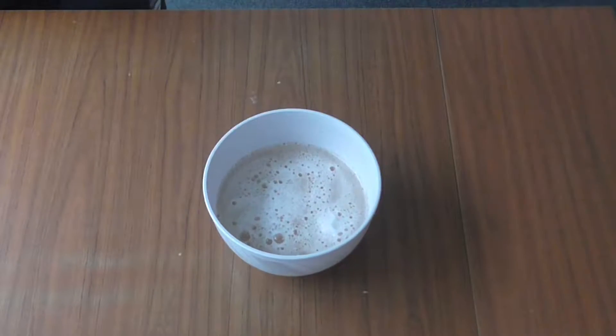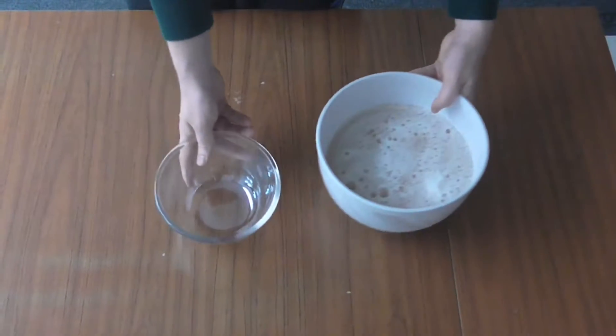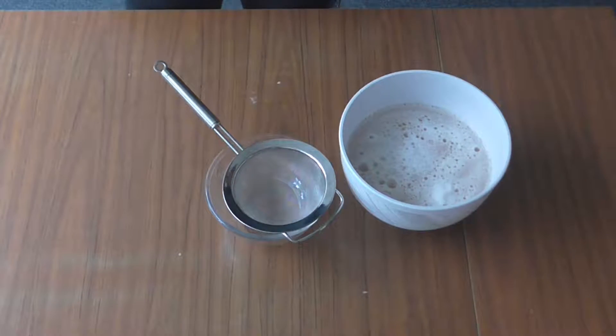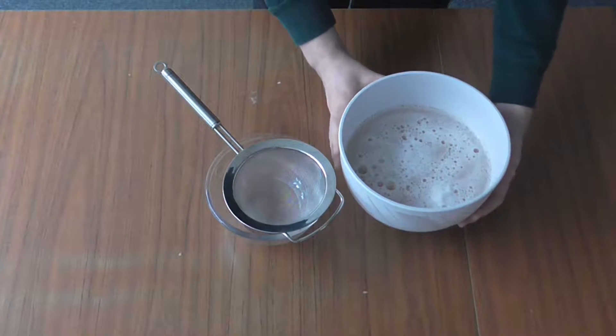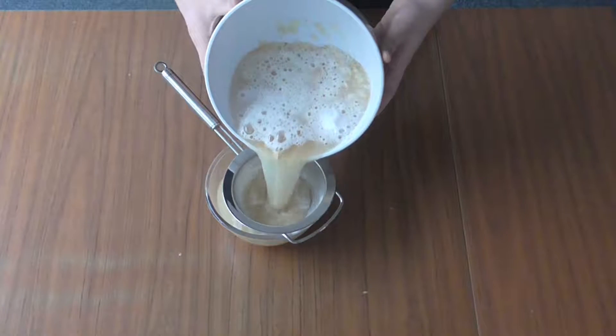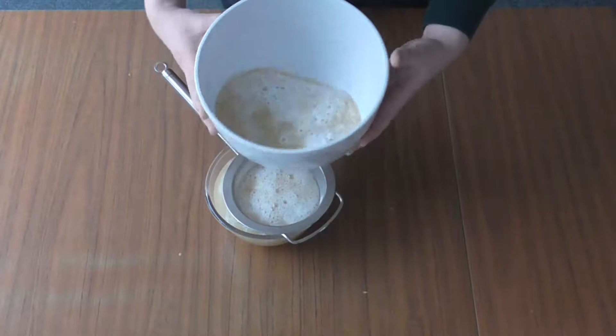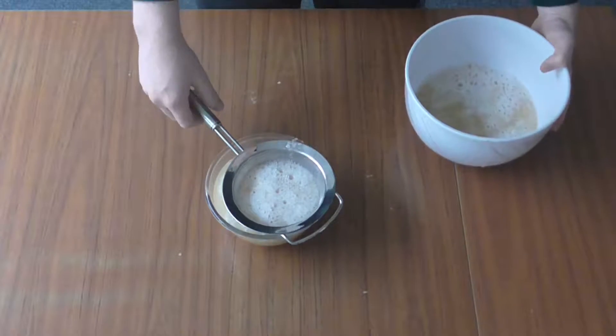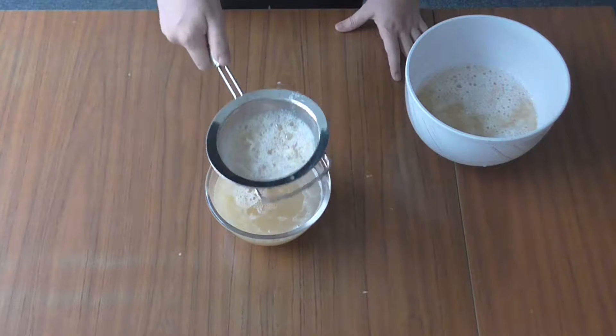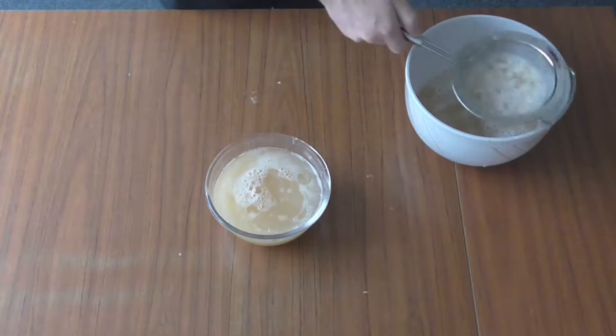And after you've done all that you want to take the transparent bowl and also the sieve. Now you have to put all the water and potato mash into the sieve and put some force on it with some kind of spoon so all the potato starch will get into the transparent bowl.